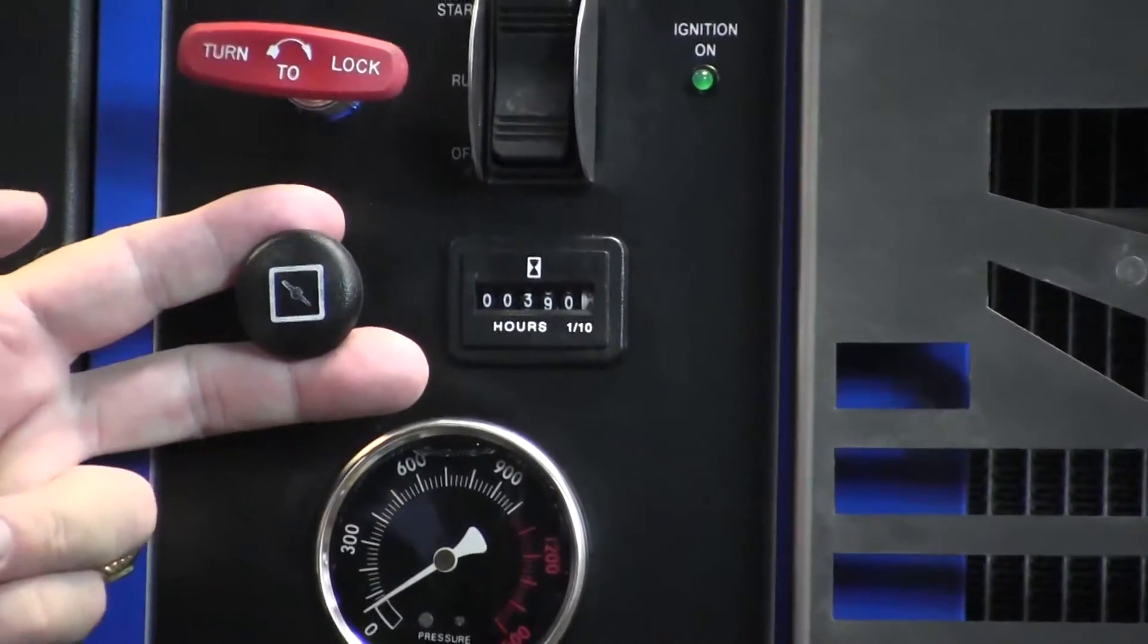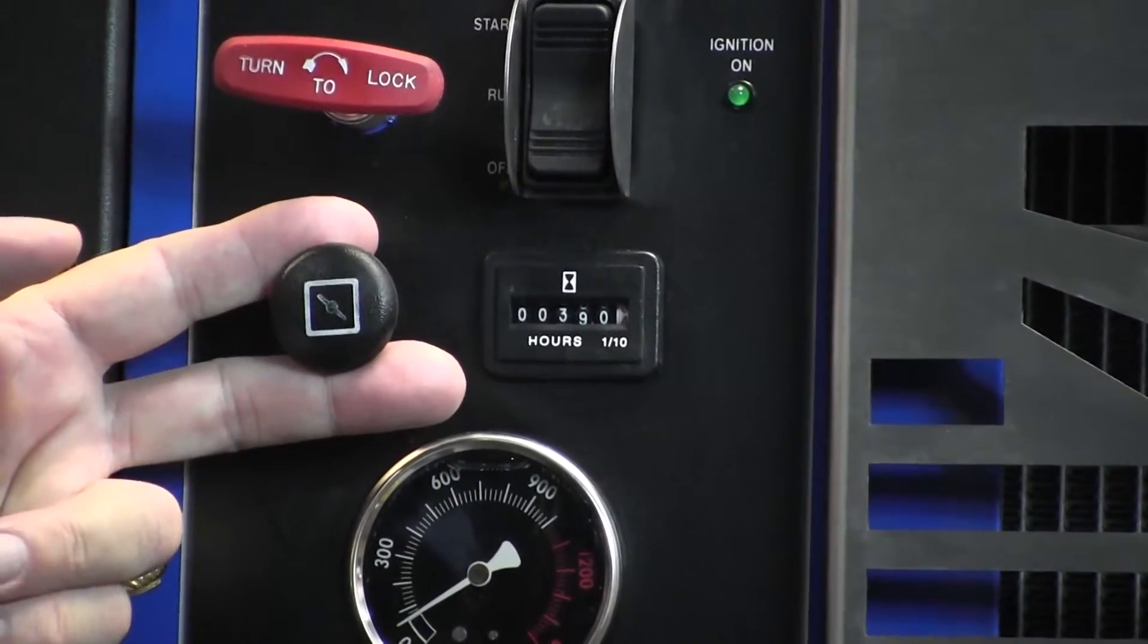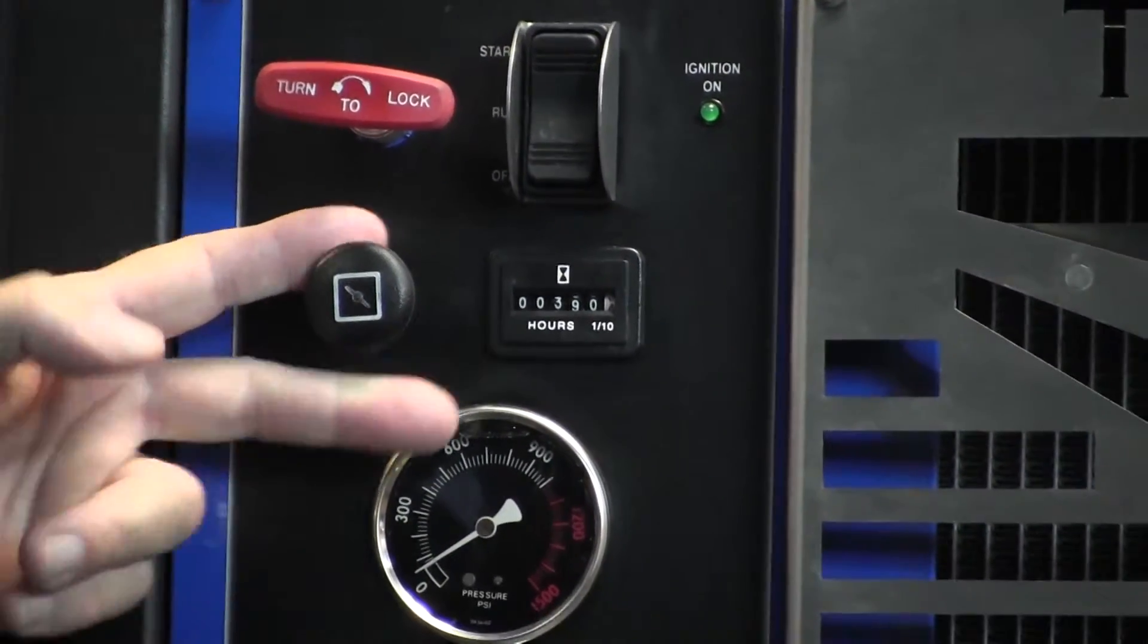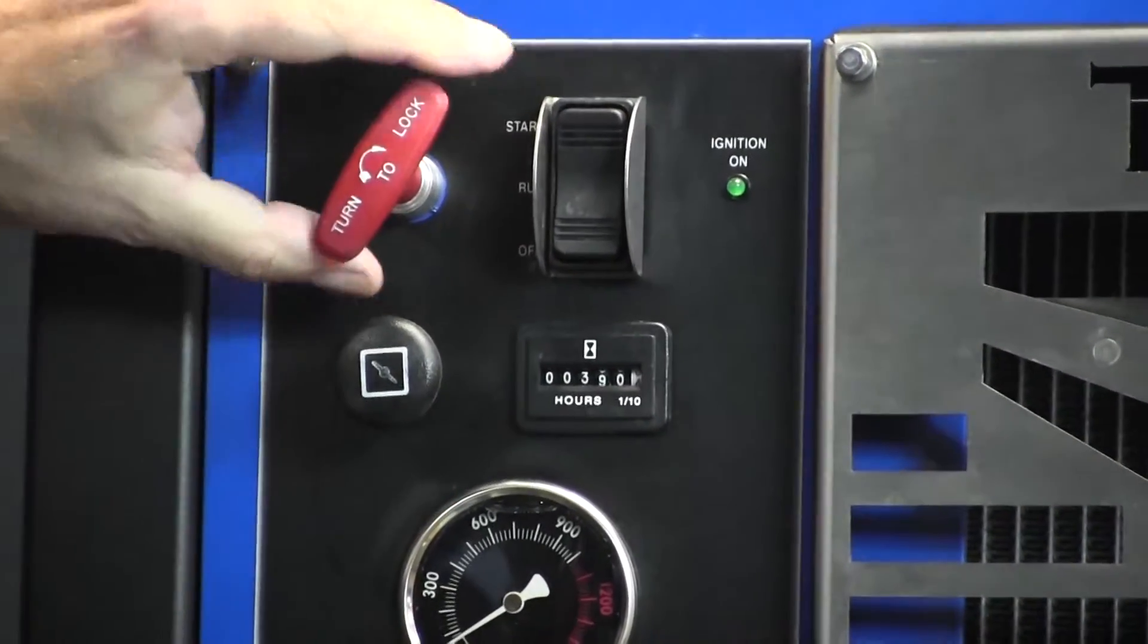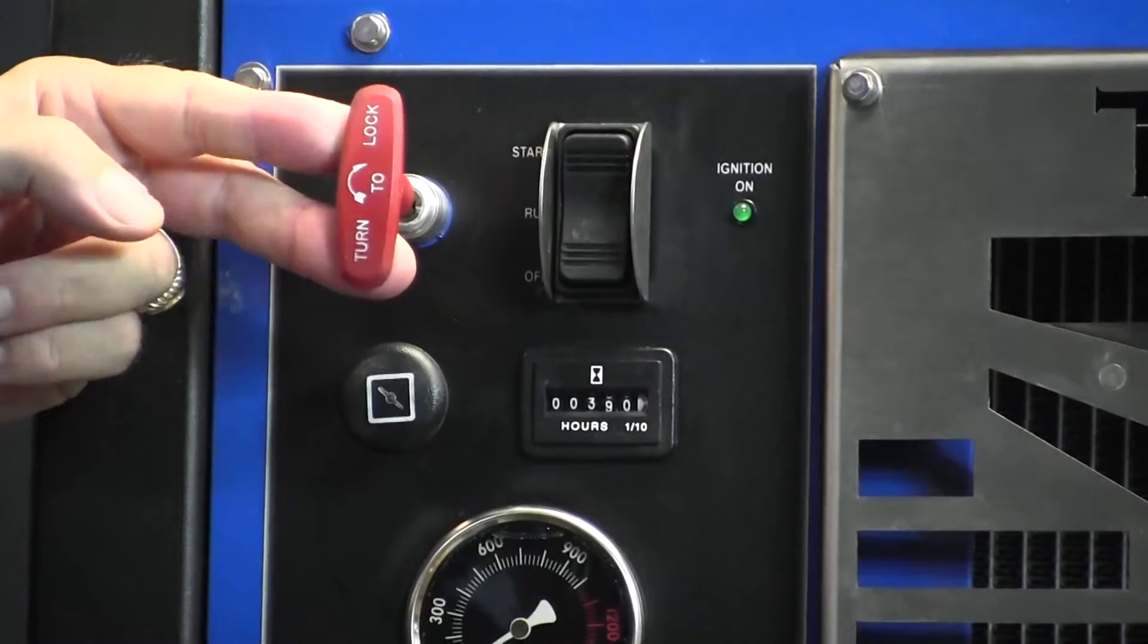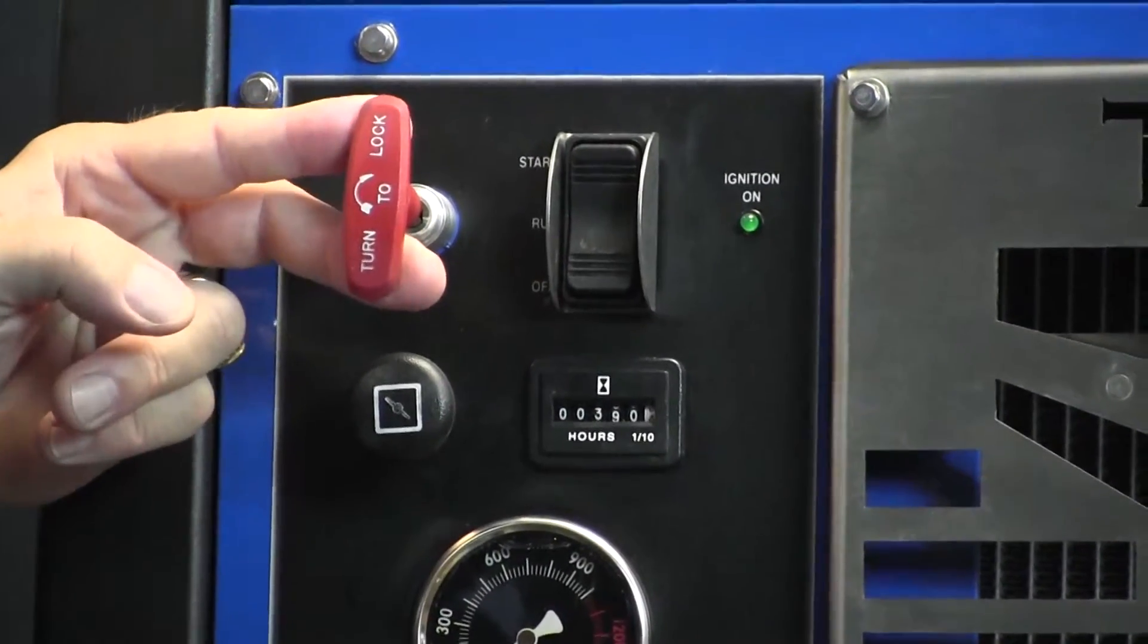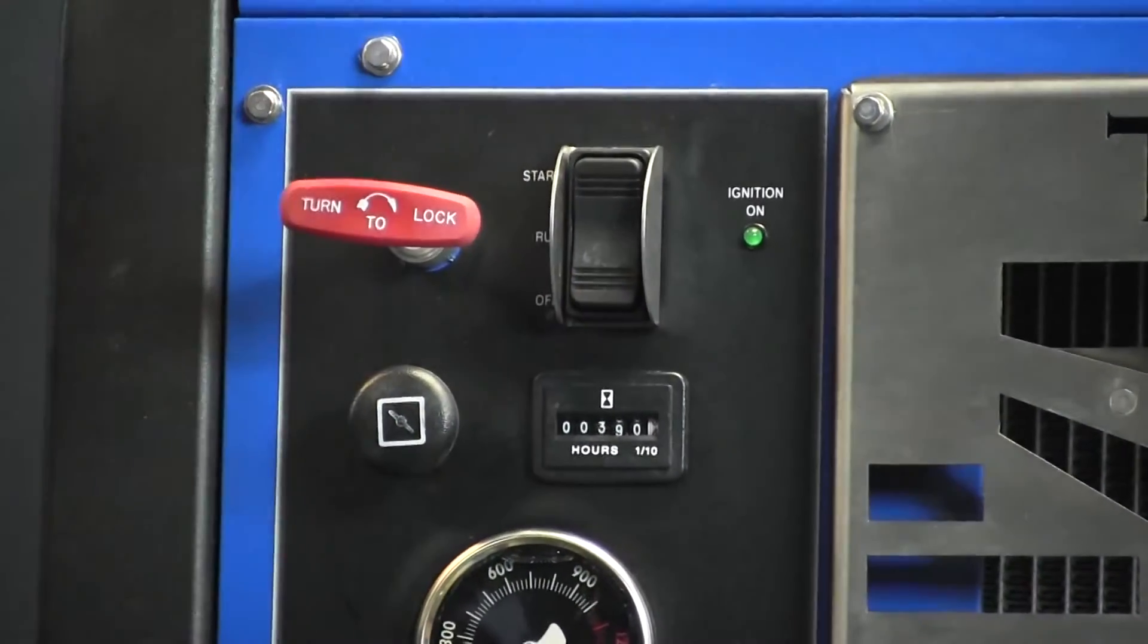We have our choke control right here for cold starts. We also have our throttle control, which is a turn-to-lock throttle control. It doesn't take much pressure to pull it out. You don't have to reef on it. Turn and lock it.